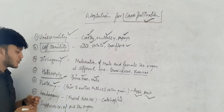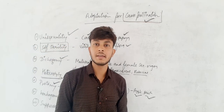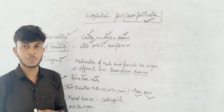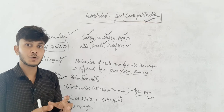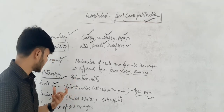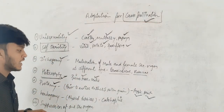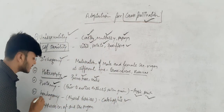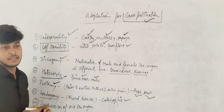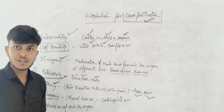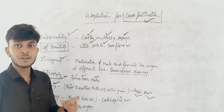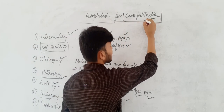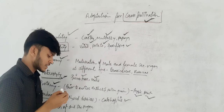Next is hercogamy. In hercogamy, there is no natural or physical barrier preventing cross-pollination. There is no self-pollination, so in this situation we can see cross-pollination. That feature is known as hercogamy. Because there is no physical barrier, self-pollination does not take place, and obviously cross-pollination will occur instead.